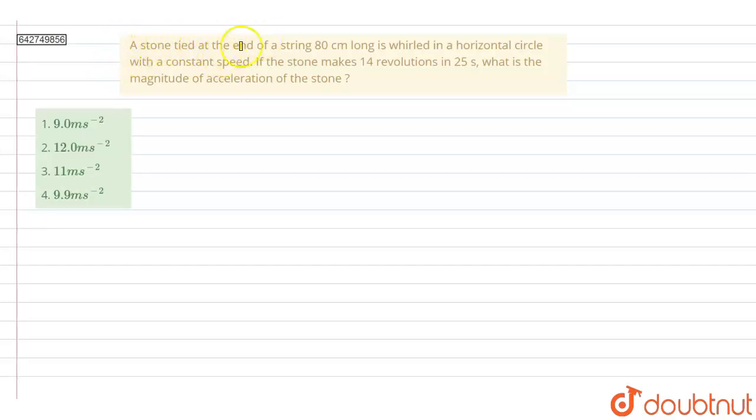A stone tied at the end of a string 80 centimeters long is whirled in a horizontal circle with constant speed. If the stone makes 14 revolutions in 25 seconds, what is the magnitude of acceleration of the stone?